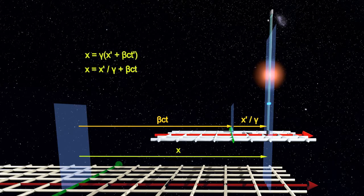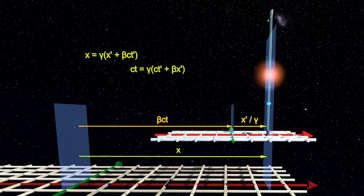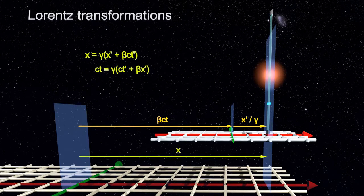If we rearrange the two relations we just found, we obtain a transformation between the event's coordinates in time in one frame and its coordinates in time in the other frame. These are the Lorentz transformations.